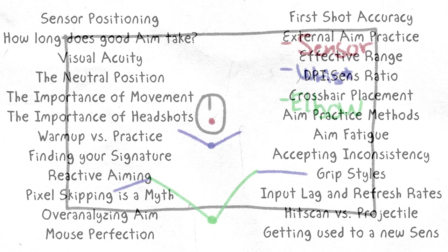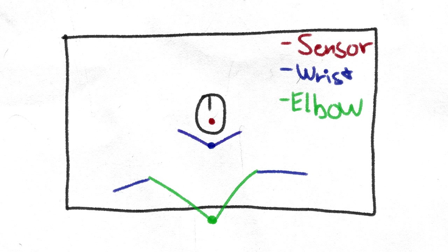Mouse sensor position is something that a lot of players don't think about at all, but it is more important than you may think. Depending on how you grip your mouse and which mouse you use in the first place, your mouse sensor can be further away or closer to the pivot points. For wrist aimers, that's the wrist, and for arm aimers, that's the wrist and elbow.